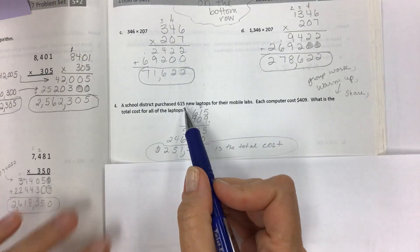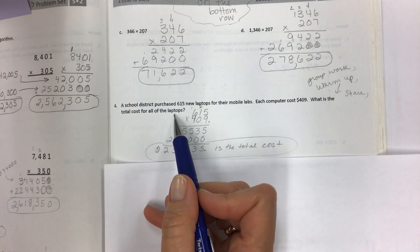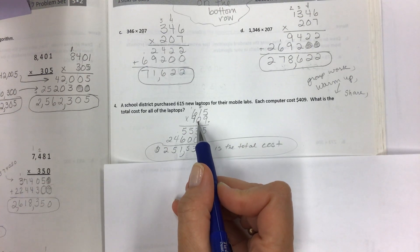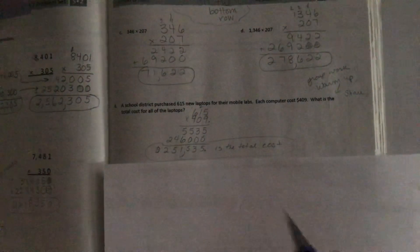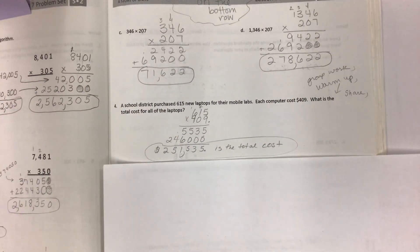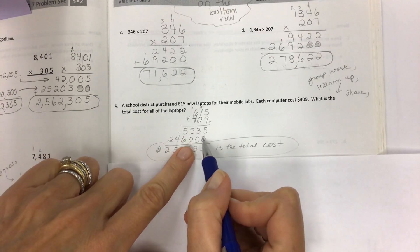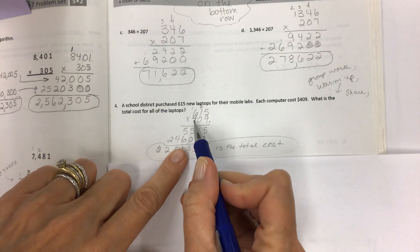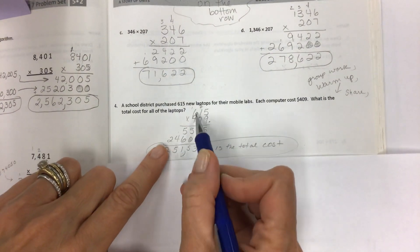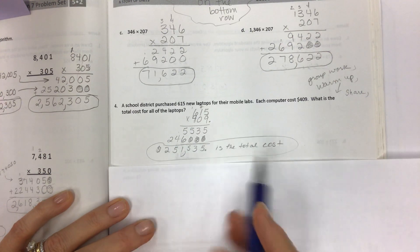A school district purchased 615 new laptops for their mobile labs. Each computer cost $409. What is the total cost for all of the laptops? 615 times 409. Again, I recommend you putting the factor with a zero on the bottom so that you only have to have two rows of partial products. Sorry, lights went out. Lights are back on. Yay. Power didn't go out. Thank goodness. So make sure that you have your times the ones and then the zero for the ones place and the zero for the tens place and then four times five is 20 and you have another zero there. Carry the two. Four times one is four plus two is six and so on. So just be really careful with your zeros and if the total is cost make sure you put a dollar sign.